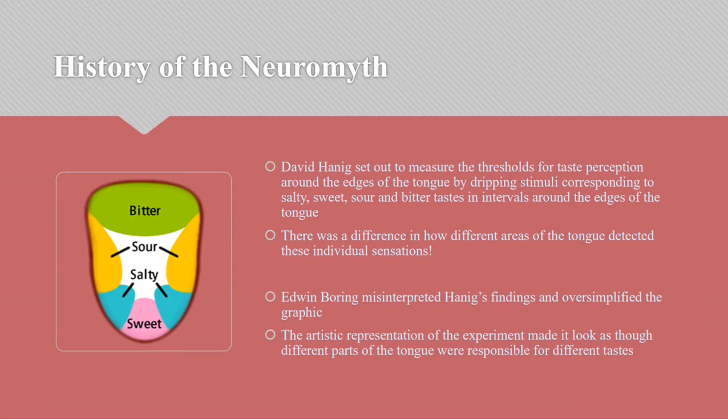For example, taste buds at the tip of the tongue were more sensitive to sweetness. In the 1940s, Edwin Boring redrew the figure for his book, but unfortunately misunderstood Hany's findings and oversimplified the graphic. The artistic representation made it look as though different parts of the tongue were responsible for different tastes, rather than showing that some parts were slightly more sensitive to certain tastes than others. This oversimplified diagram made its way into classrooms and textbooks because it's easy to understand, providing an efficient way to demonstrate how taste works without diving into neurological and cellular connections.